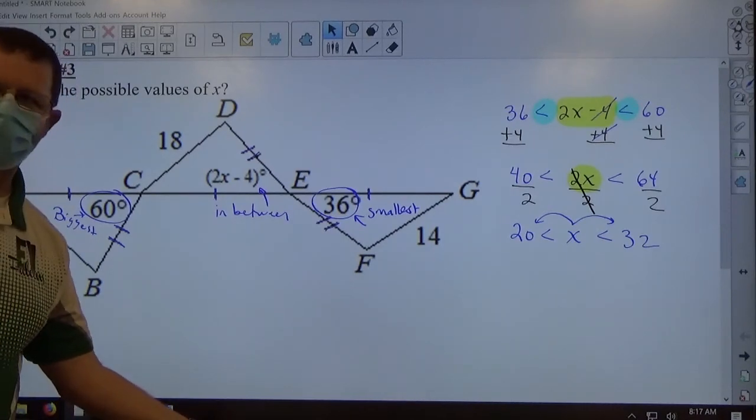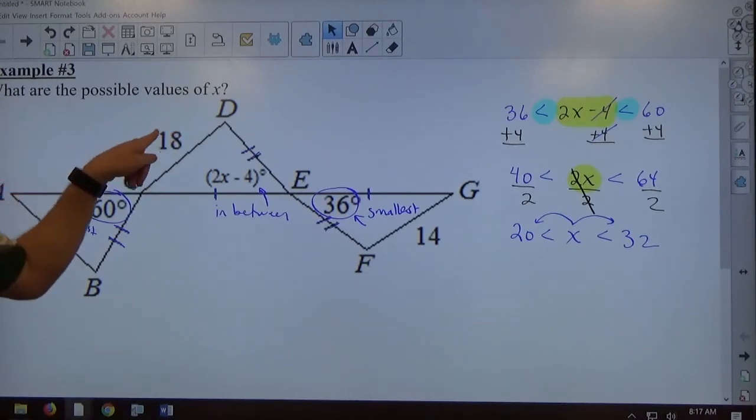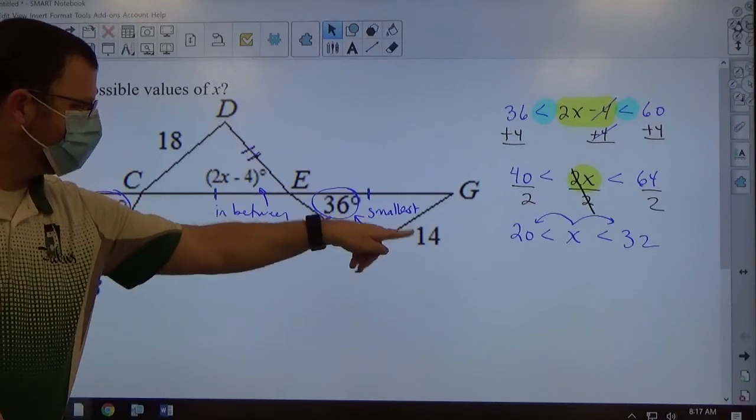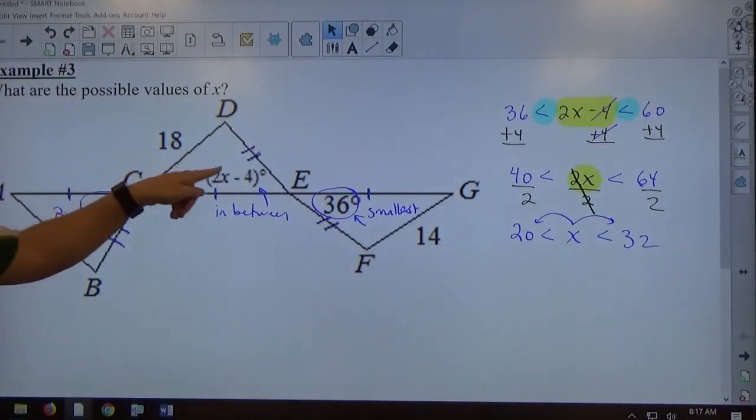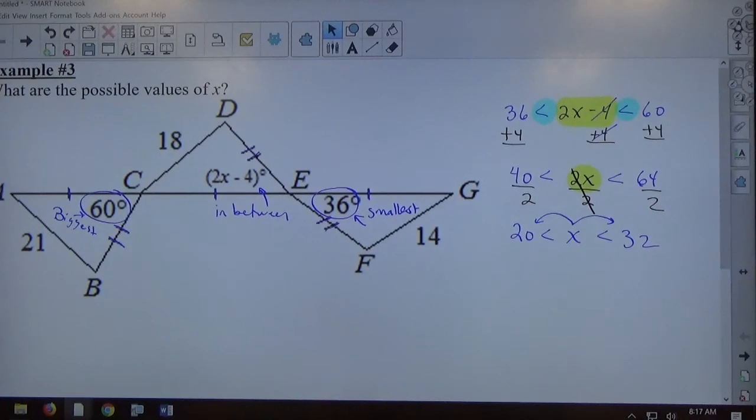All right. So that's how you do that type of problem. There's one like that on the upcoming test, so make sure you grasp that. But again, biggest side, middle side, smallest side, biggest angle, middle angle, smallest angle. That's create your inequality, and then you solve that inequality and get the answer.